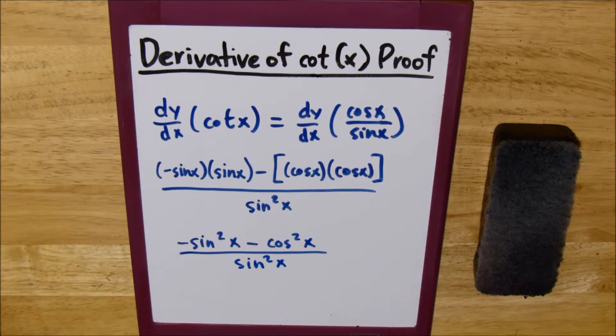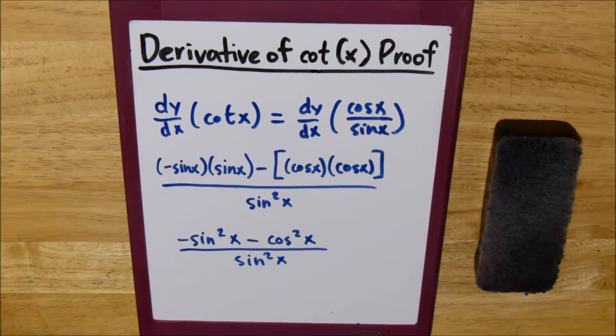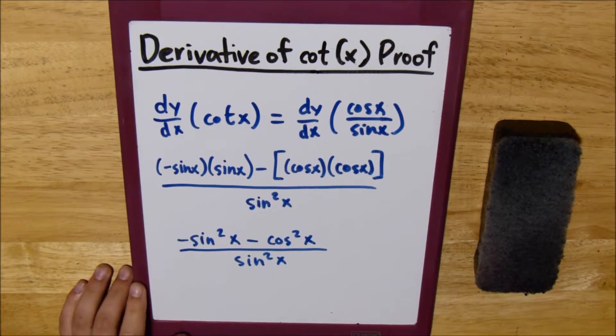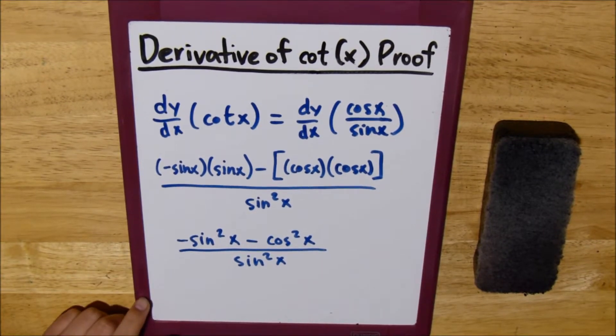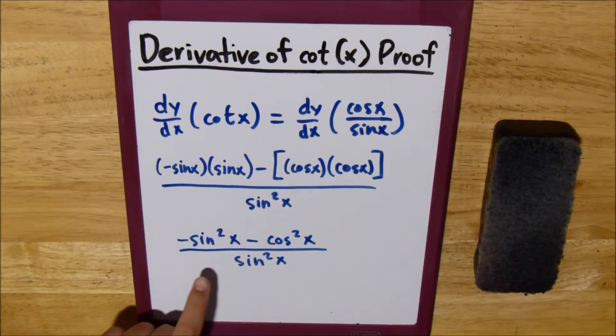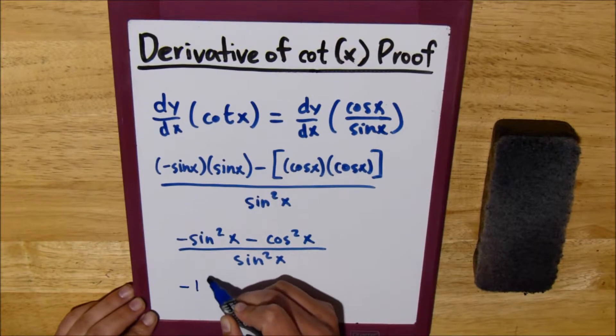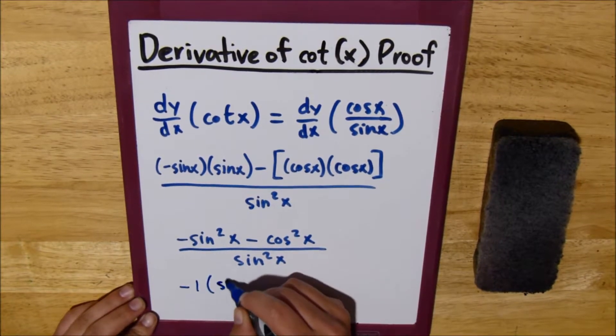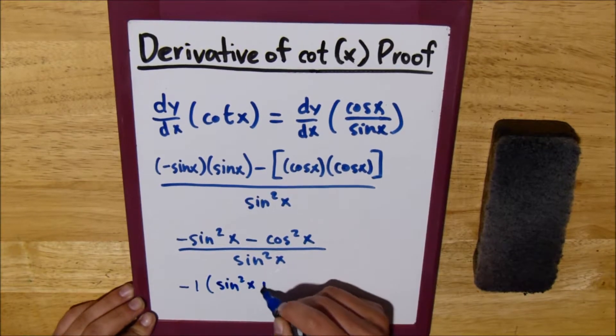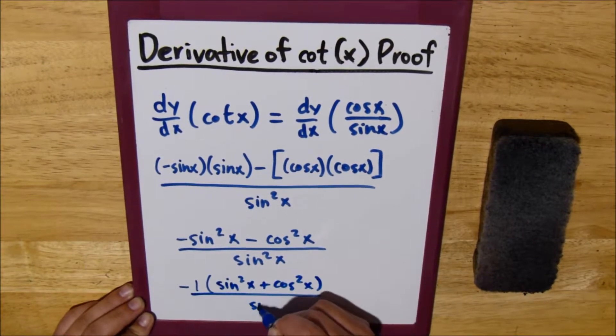Here we're going to do something like what we did in the tangent of x derivative video, but we have to factor out a negative first. What we're trying to accomplish is so that the numerator equals sine squared x plus cosine squared x. We can do that by factoring out a negative 1, and we get sine squared x plus cosine squared x all over sine squared x.